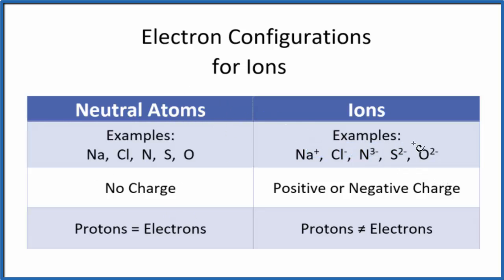Neutral atoms don't have a charge like the ions which have positive or negative charges. In a neutral atom, the number of protons in the nucleus equals the electrons. That's why there's no charge - we have positive and negative that balance out. But for ions, the protons don't equal the electrons, and because of that we end up with a positive or negative charge.